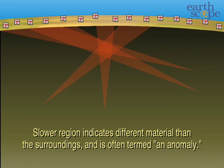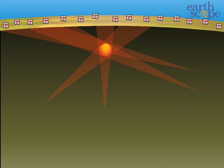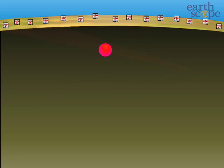By using what we know about how seismic waves travel through different materials, we can infer what the structure might look like. What does this tell us geologically? What are these anomalies?